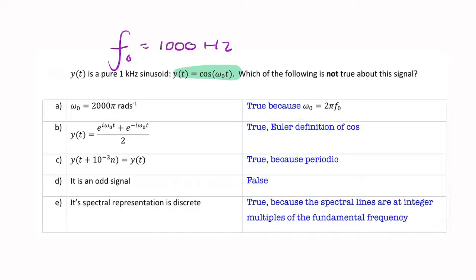Let's look at the first statement, that omega naught, the frequency in radians per second, is 2,000 pi. Now remember,